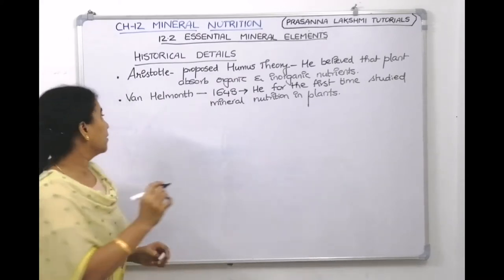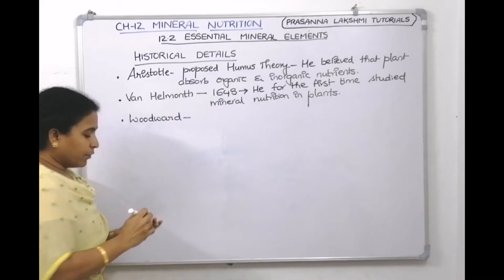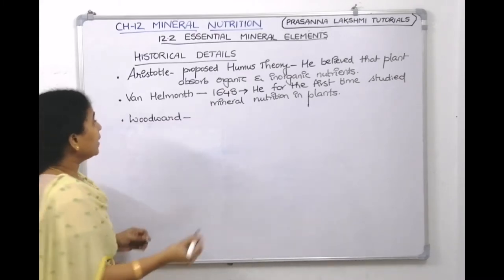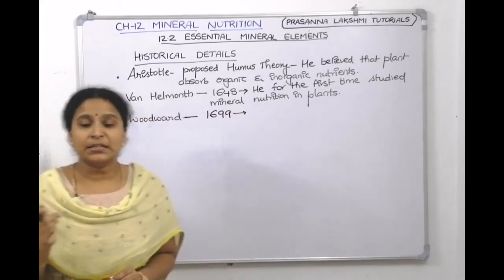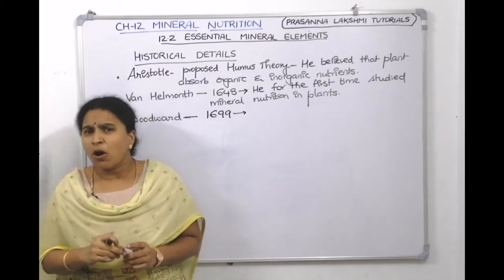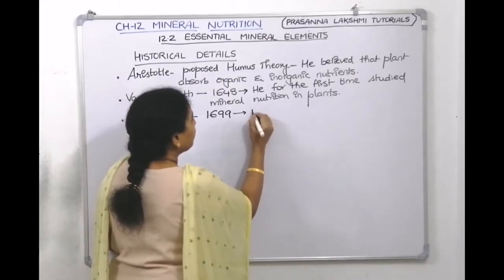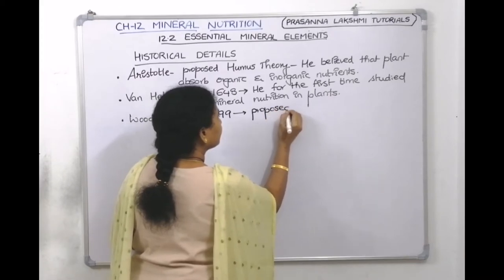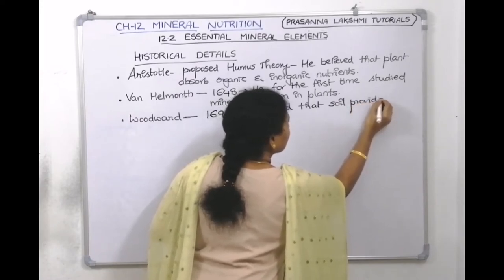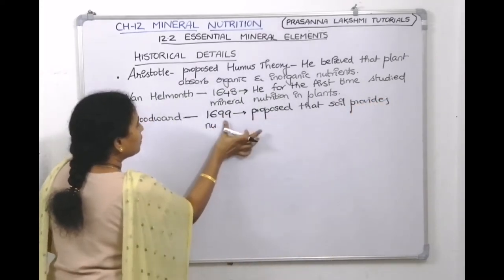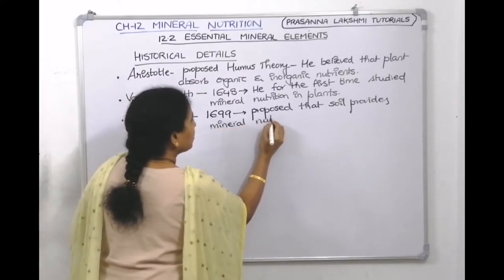The next scientist is Woodward. Woodward, in the year 1699, proposed that soil provides mineral nutrients to the plant.